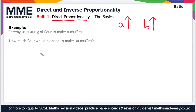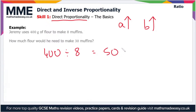Importantly, they increase at the same rate. For example, Jeremy uses 400 grams of flour to make eight muffins — how much flour would he need to make 30 muffins? The first thing we can do is divide 400 grams of flour by eight: 400 divided by 8 equals 50, so that's 50 grams of flour per muffin.